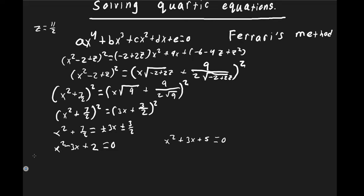For x² − 3x + 2 = 0 we factor: (x − 2)(x − 1) = 0, giving x = 1 and x = 2. For x² + 3x + 5 = 0 we use the quadratic formula: x = (−3 ± √(9 − 20)) / 2 = (−3 ± √(−11)) / 2 = (−3 ± i√11) / 2.